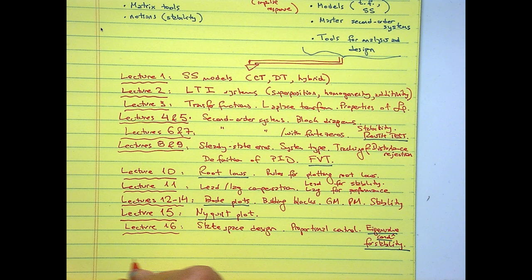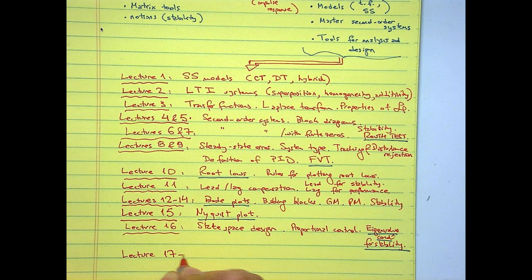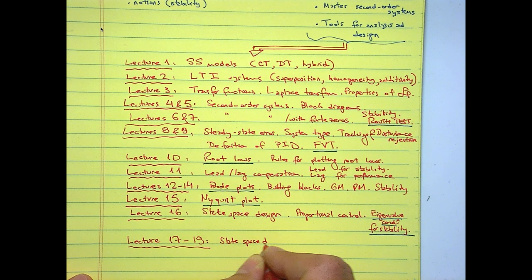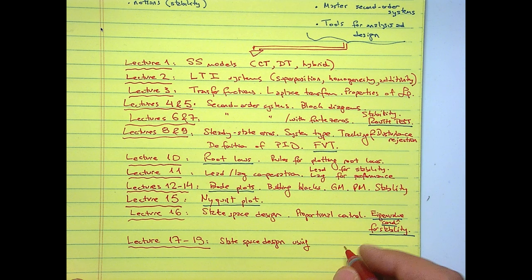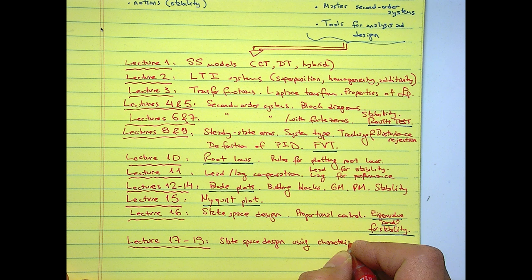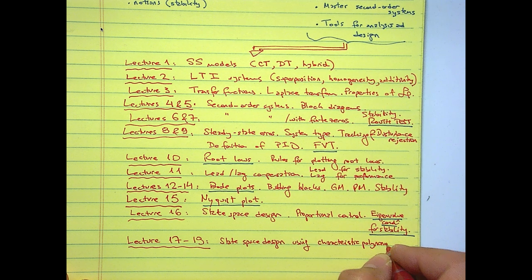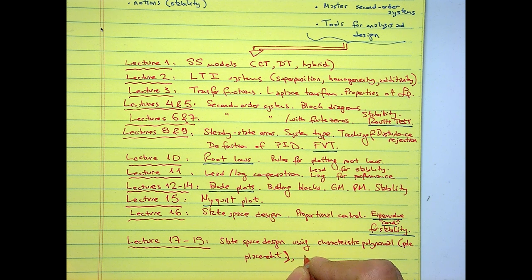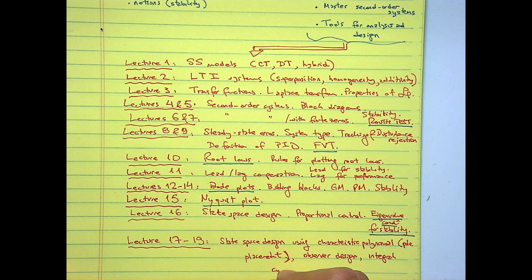In lectures 17 through today we cover specific ways to do more state space design using the characteristic polynomial — we call this pole placement. We also started talking about the observer, which we will continue today, and integral control, which I will also talk about today.